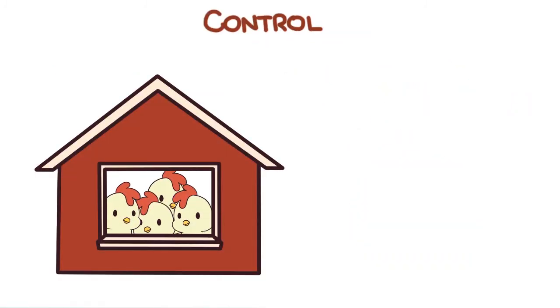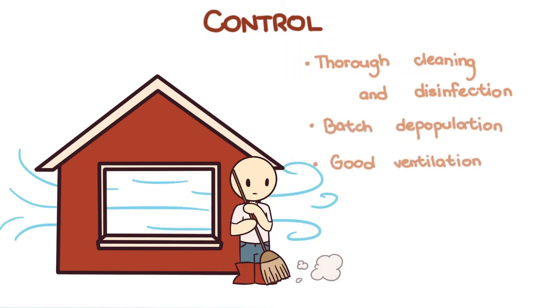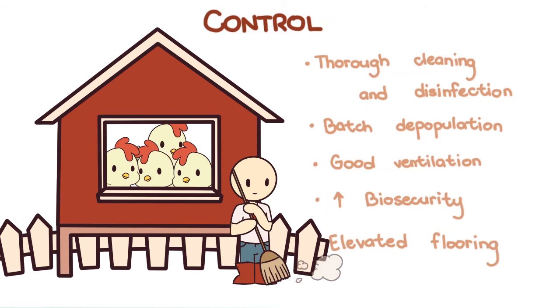Control can be achieved through thorough cleaning and disinfection, although oocysts are generally resistant to many disinfectants, batch depopulation between grow-outs, having good ventilation, increasing biosecurity measures, and keeping birds on wire floors elevated from their droppings.